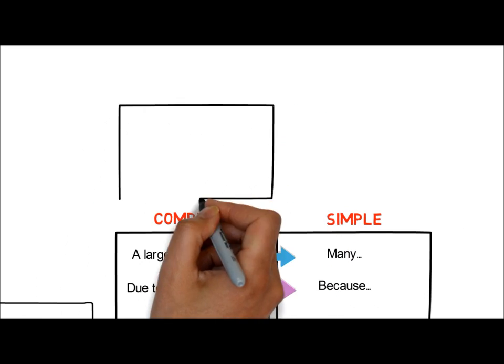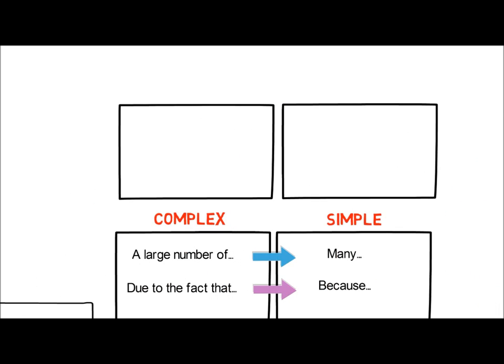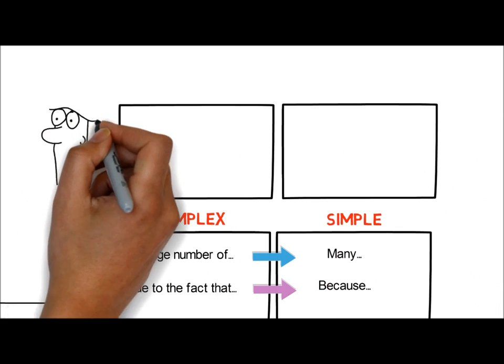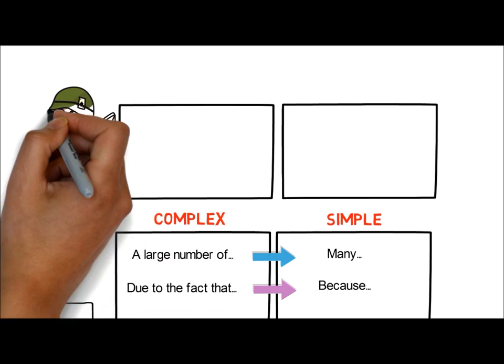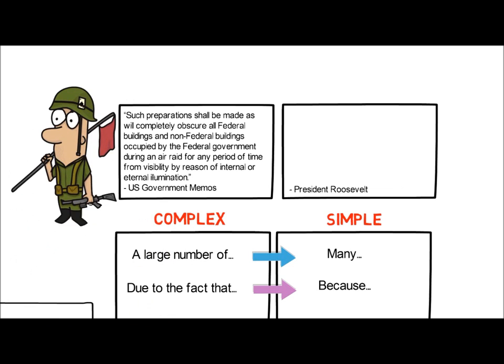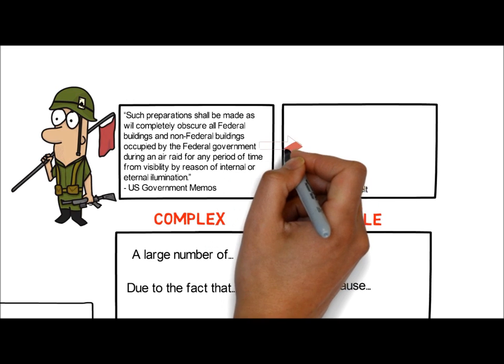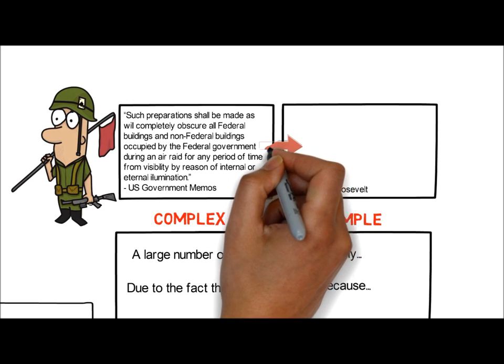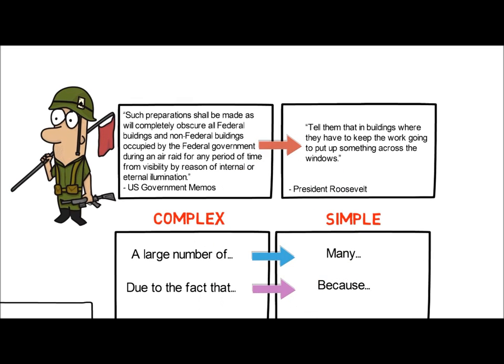There are lots of good examples highlighting the need for simplicity. Take this quote from a WWII blackout order in the US. Even the president at the time, Theodore Roosevelt, couldn't understand his own government's memo and so simplified the passage. Which one is simpler and gets the message across more effectively?